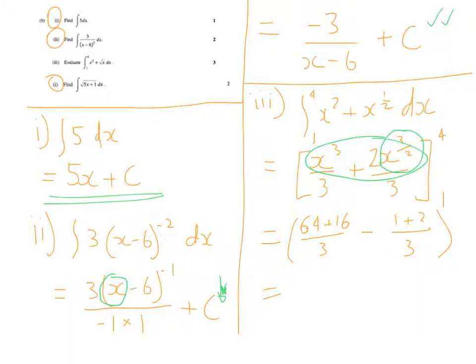And what we end up with is there, well 64 plus 16 is 80, minus 3, so we end up with 77 on 3, or 25 and 2 thirds. Not an area, that's not an area, no units. Okay that's even worth writing down, there are no units there, because it's not an area, it's an integral.